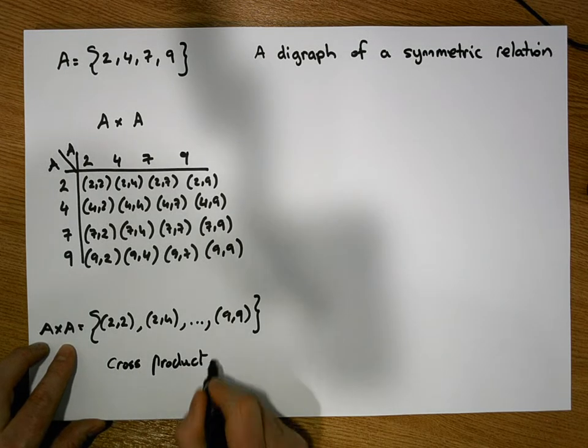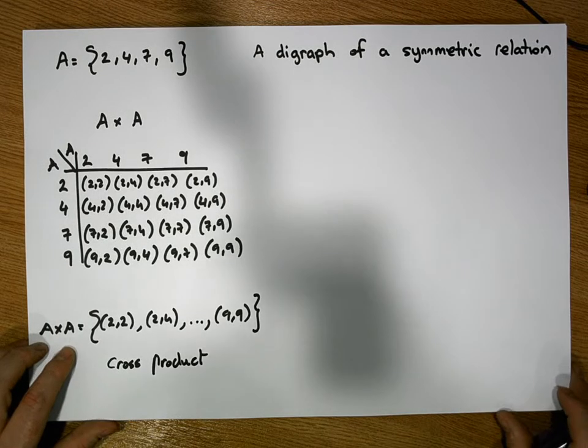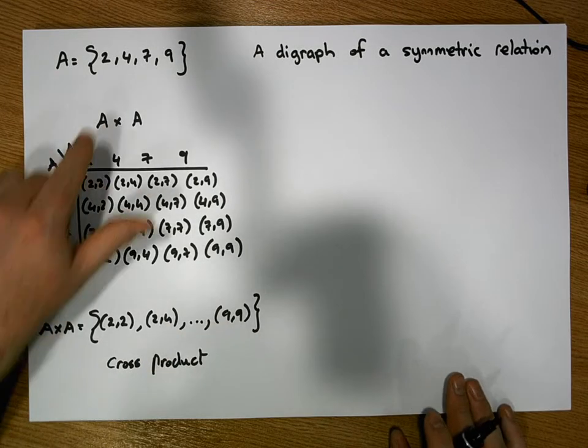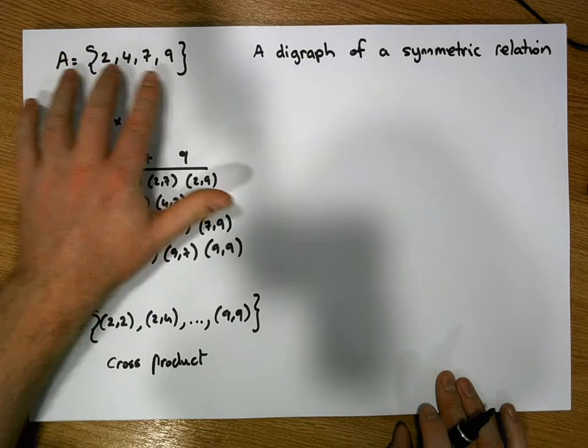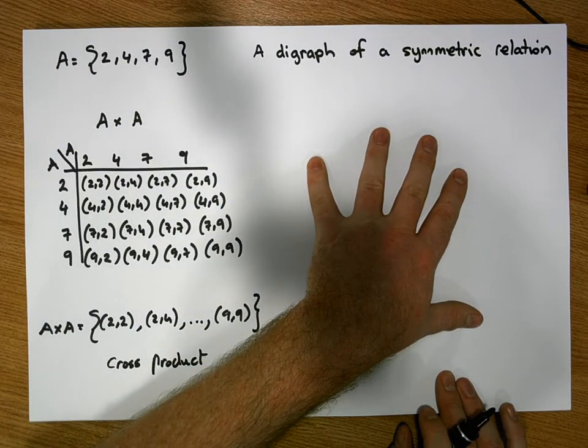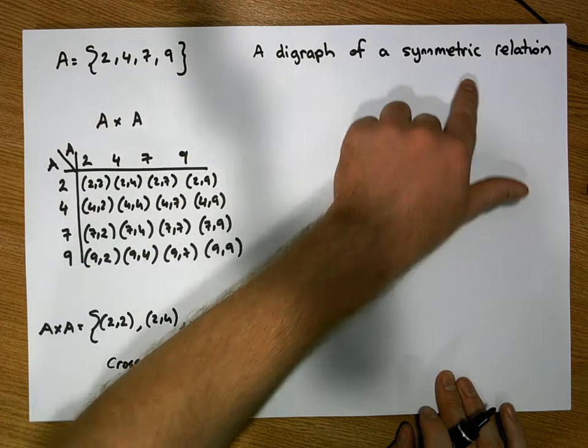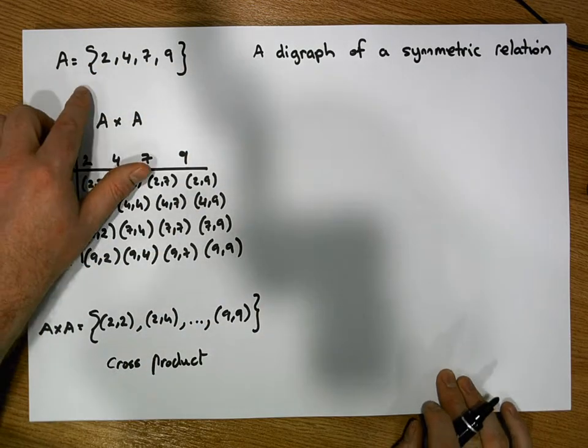But we're interested today in considering digraphs of symmetric relations. So let's just set the scene by creating a digraph, or setting the scene by putting the elements of the digraph in nodes, which is the elements of the set A.